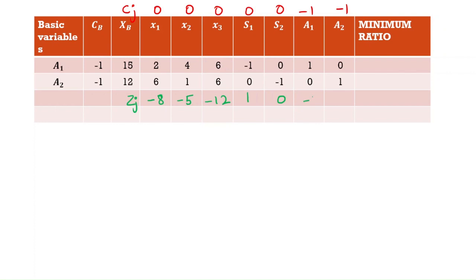The zj values for the artificial variable columns come out as 0, 0, 1, 1. Now delta j = zj - cj, giving us: -8, -5, -12, 1, 1, 0, 0.